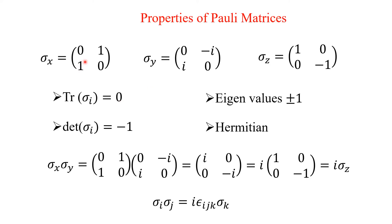Now consider the determinant. For Sigma X, the determinant is 0·0 minus 1·1 = -1. For Sigma Y, the determinant is 0·0 minus (-i)(i) = minus of minus i² = minus of (minus of minus 1) = -1. For Sigma Z, the determinant is 1·(-1) minus 0 = -1. So the determinant of all Pauli matrices is minus 1.